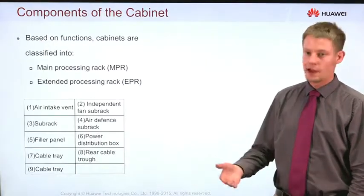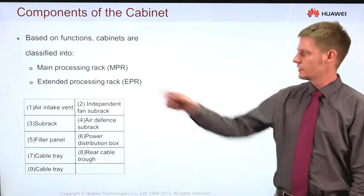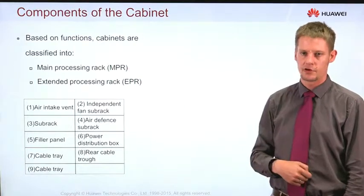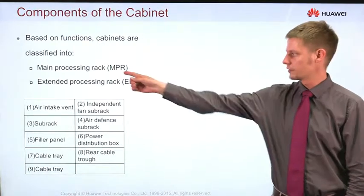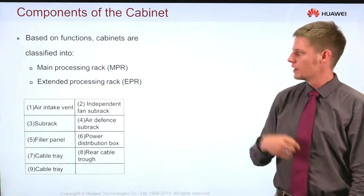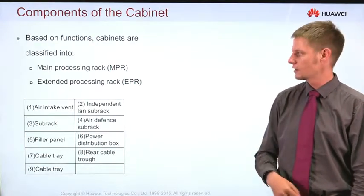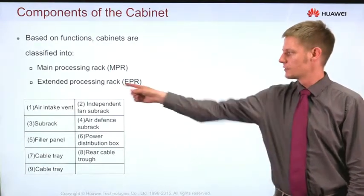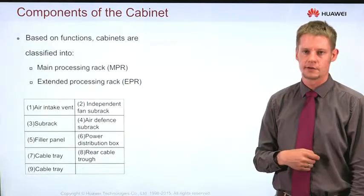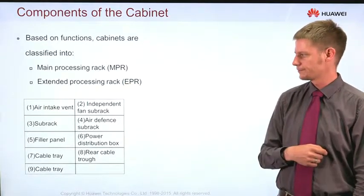If we have only one cabinet then this is always the main processing rack, abbreviated with MPR. If we need more capacity we can have a second cabinet, and the second one would then be called extended processing rack.